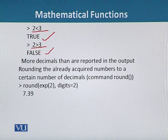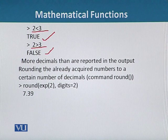Moreover, more decimals than are reported in the output can be limited. This can be accomplished by rounding the already acquired numbers to a certain number of decimals.